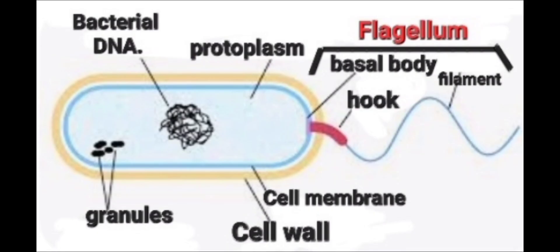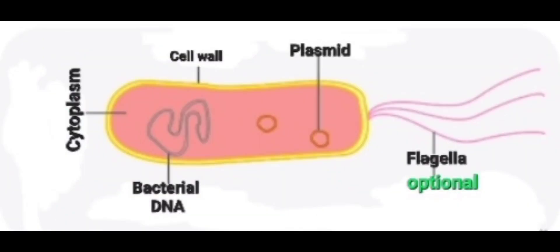A bacteria falls under the kingdom Monera. Each individual bacterium is rather a simple unicellular organism. It contains a living substance called protoplasm or protoplast lying within the cell membrane. It is called protoplast because it contains both the cytoplasm and the bacterial chromosome, which is surrounded by a non-living stiff cell wall. This cell wall is made up of peptidoglycan, different from the cellulose cell wall of the plant cell.